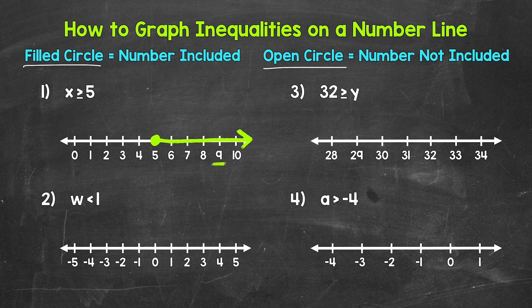Let's move on to number two, where we have w is less than one. For this example, our number in the inequality — one — is not included. It's not a solution. W has to be less than one. And think about it: one is not less than one. One is equal to one. So it's not a solution.